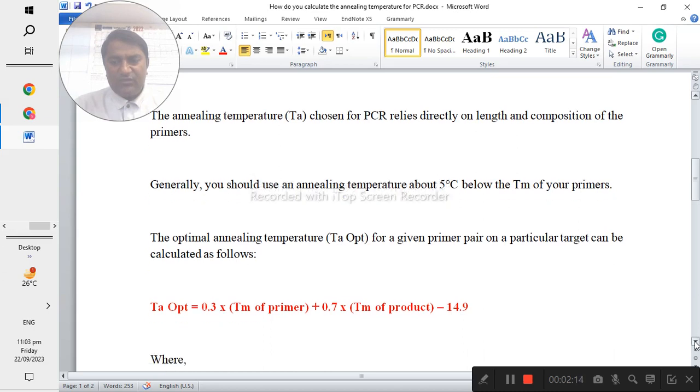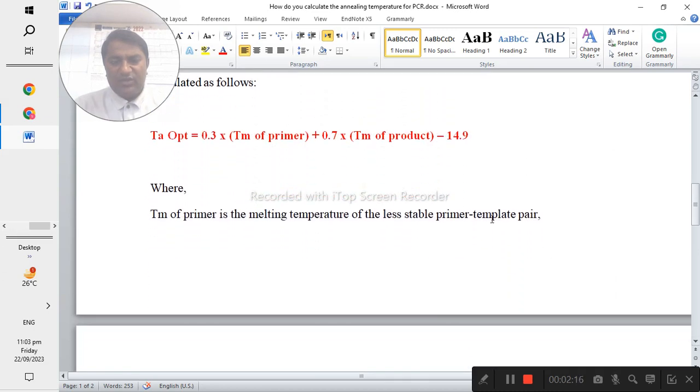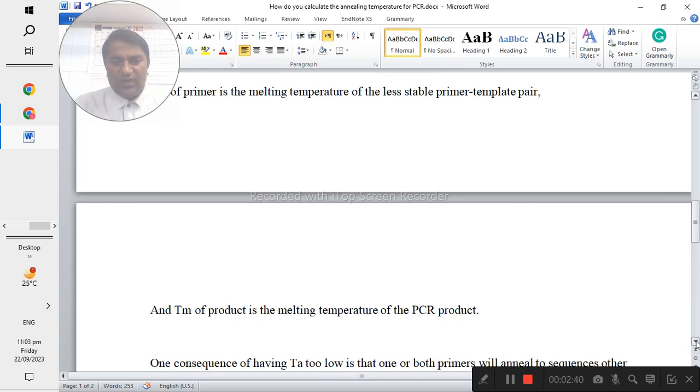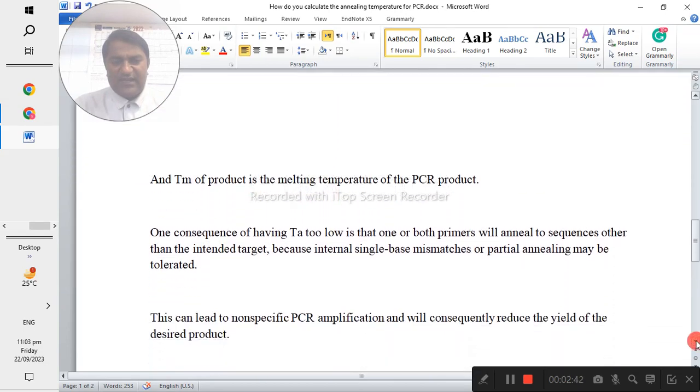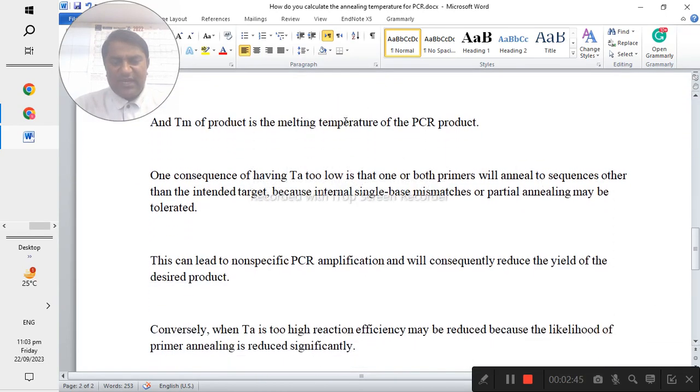This is the formula: Ta optimal = 0.3 × (Tm of primer) + 0.7 × (Tm of product) - 14.9, where the Tm of the primer is the melting temperature of the less stable primer-template pair, and Tm of product is the melting temperature of the PCR product.